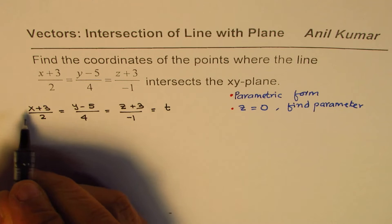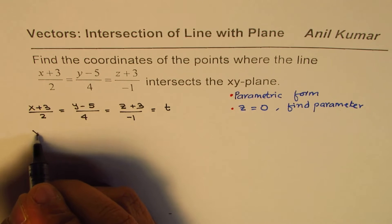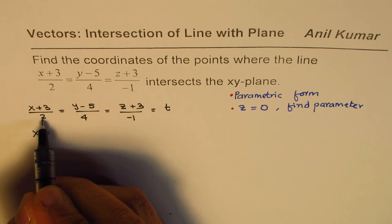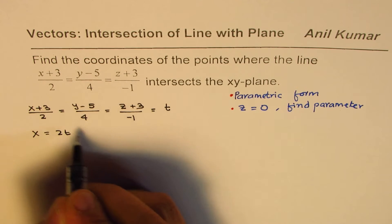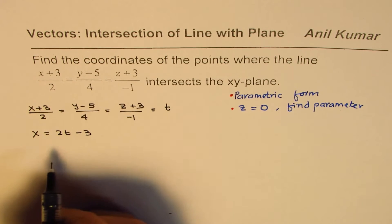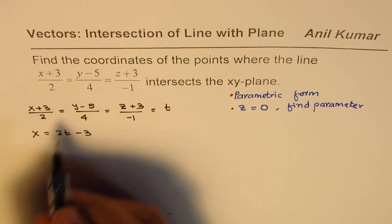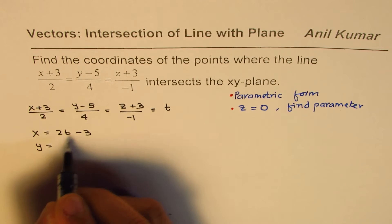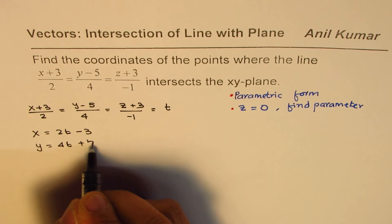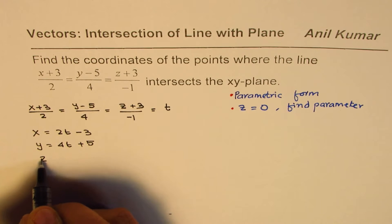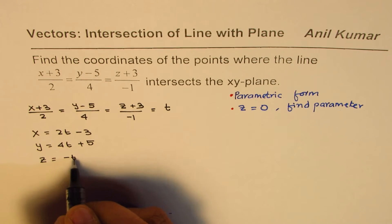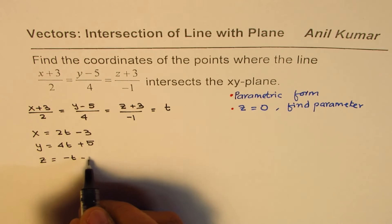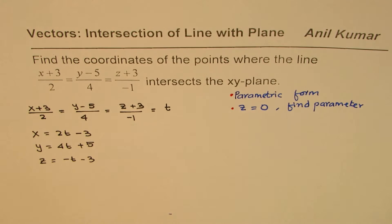Now, one by one, we can write parametric form, starting with the first one, x equals to 2 times t. Let me write 2 times t first and then minus 3. The second equation, y equals to 4 times t plus 5 and z equals to minus t minus 3. So we get three different equations.